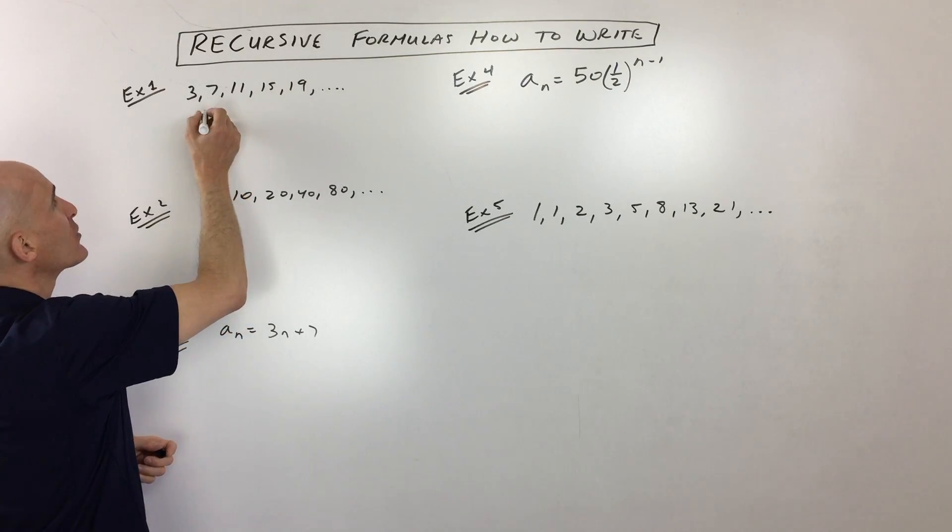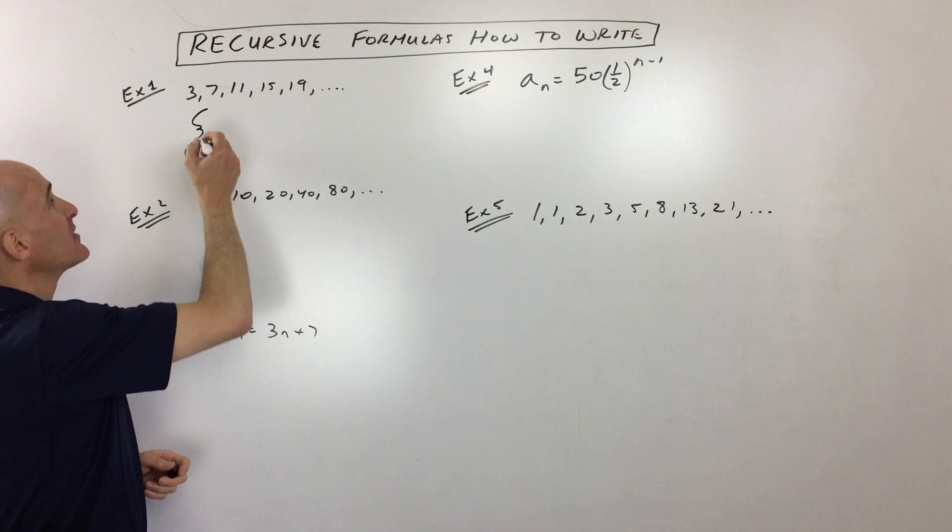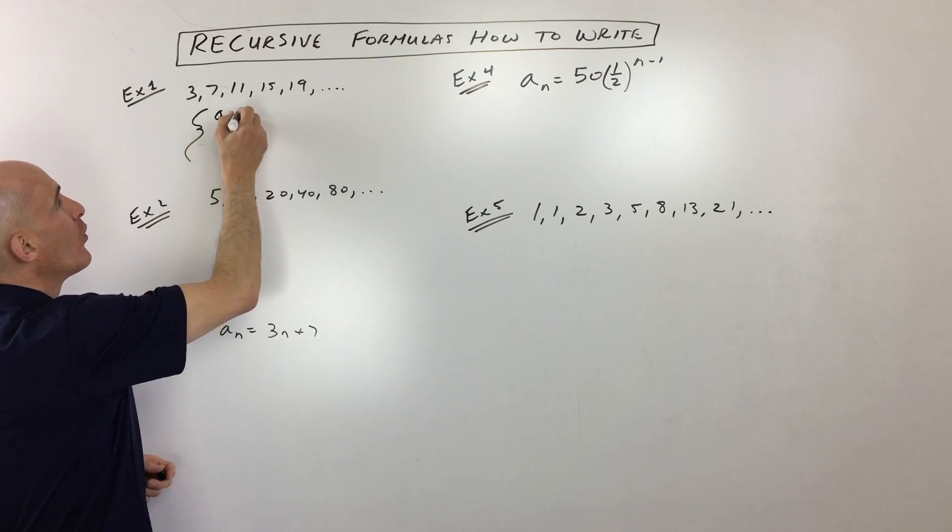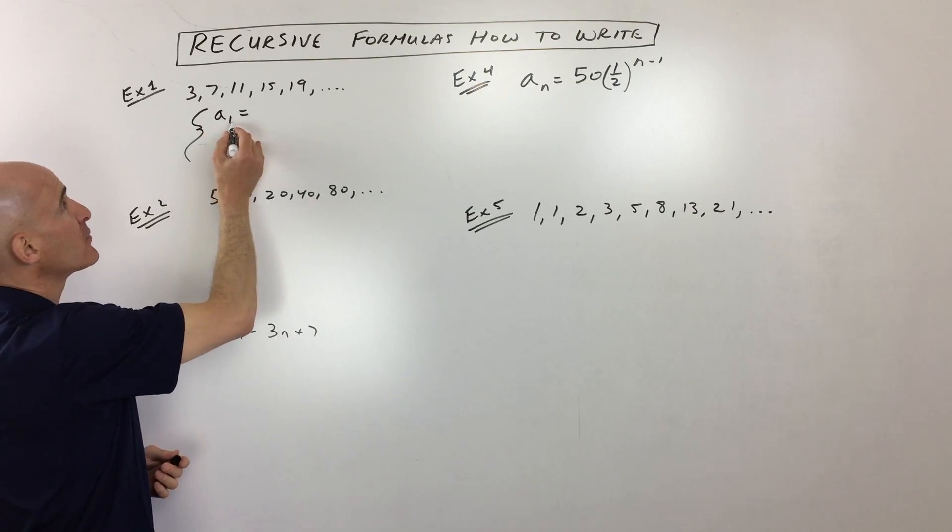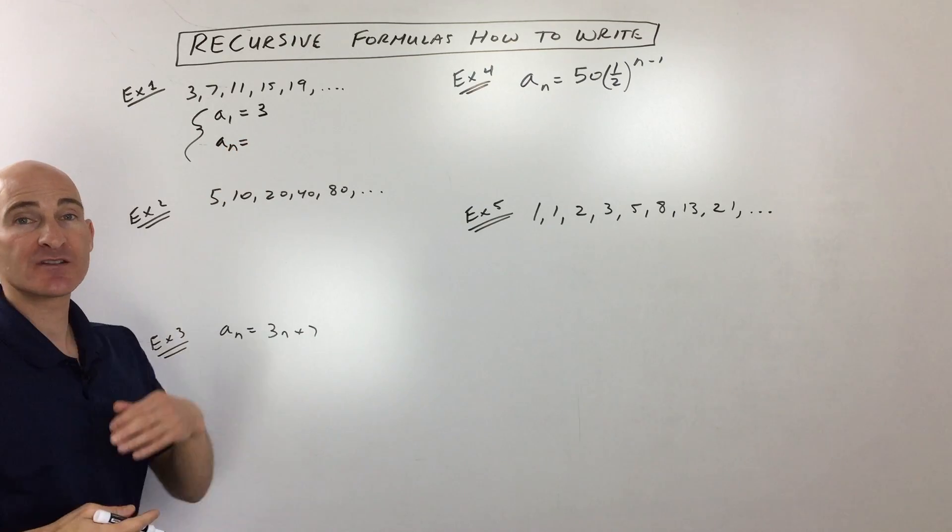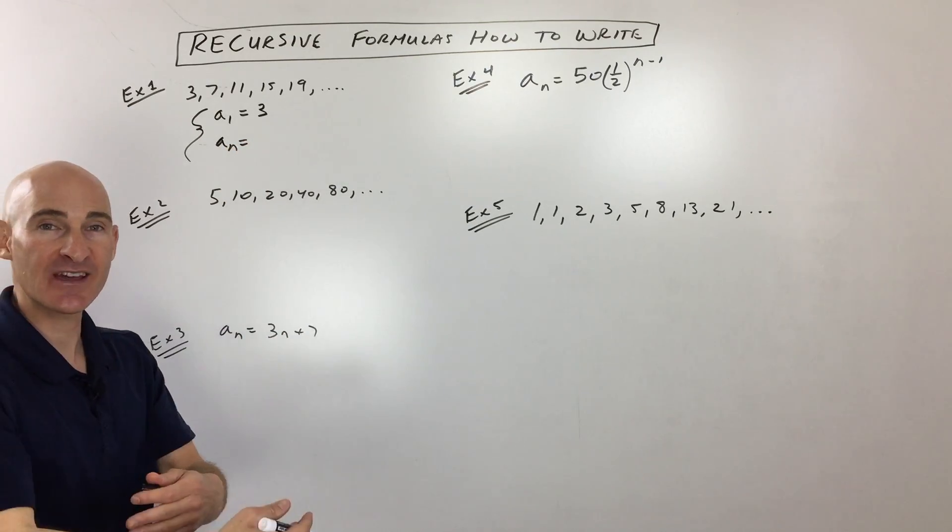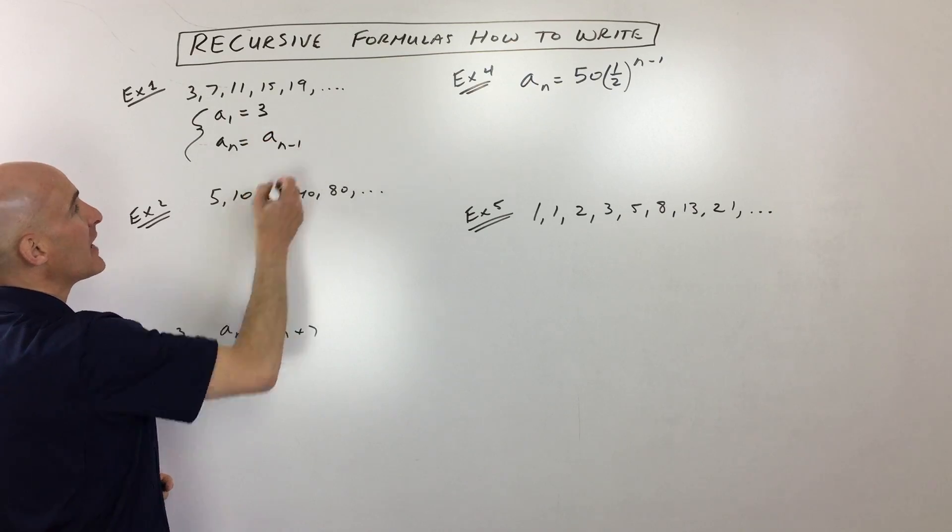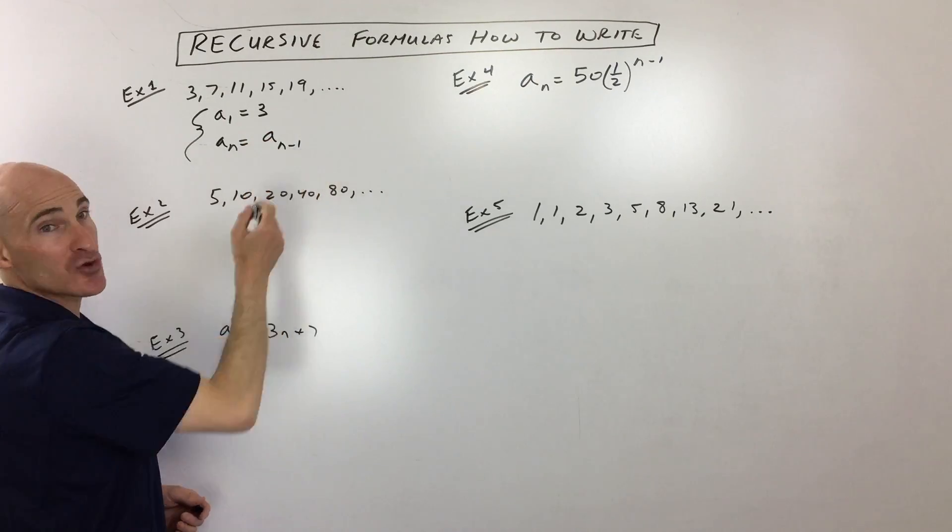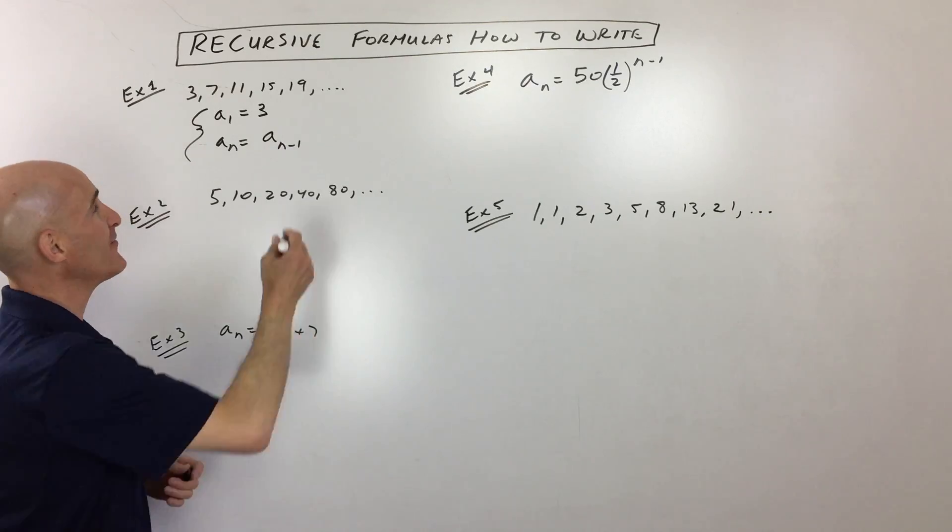And so what you do when you write a recursive formula is you tell the person what's the first term that you're starting with. So a sub 1, that's the value of the first term, which is 3. And then you give them a formula to find the next term. So we're going to use this notation a sub n minus 1. Sub means like subscript, a little bit below the line, like a submarine below the water, right?